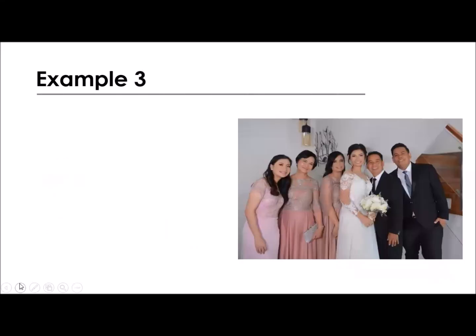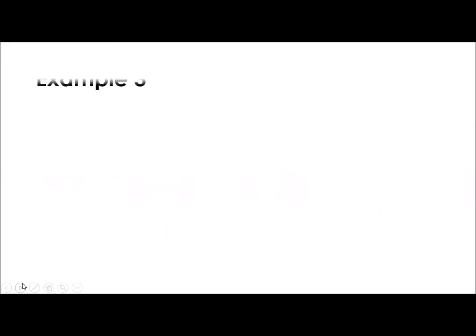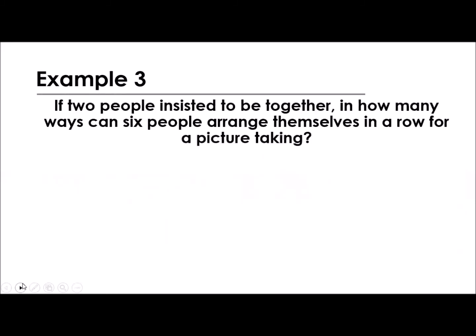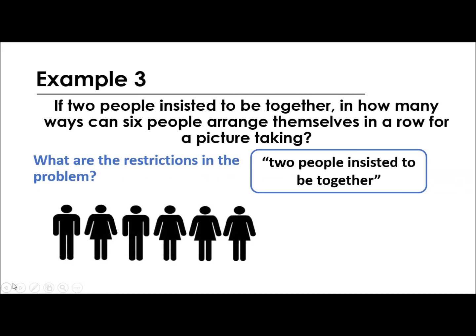So let's have a more tricky question. How about, based on this picture, 2 people insisted to be together. So that is the restriction. Pay attention. Remember, we have restrictions. 2 people insisted to be together. Because there are times, especially for couples, they want to always be beside each other.